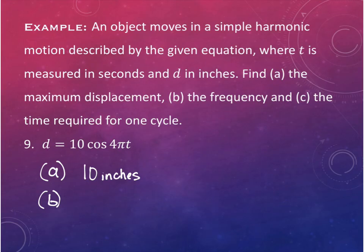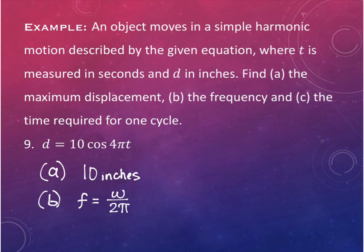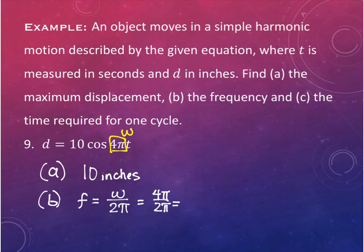Part B: frequency. Frequency = ω/(2π). Omega is the value multiplied by t in the equation, which is 4π. So frequency = 4π/(2π) = 2. The frequency is 2 cycles per second.